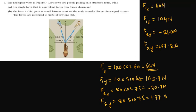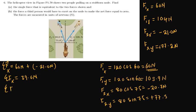Let's add up everything. Fx, the summation of all forces in the x, equals 60 Newtons plus negative 21.0 Newtons, giving us 60 minus 21 equals 39.0 Newtons. The summation of all forces in the y equals 77 plus 104 Newtons, which equals 181.0 Newtons.